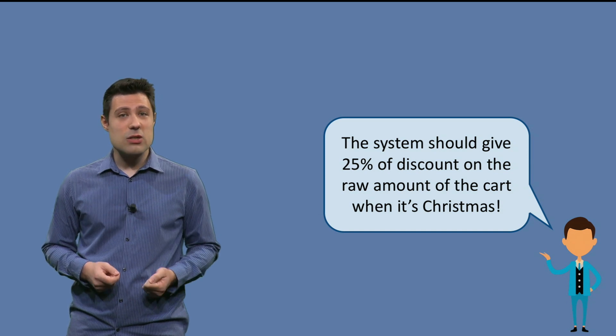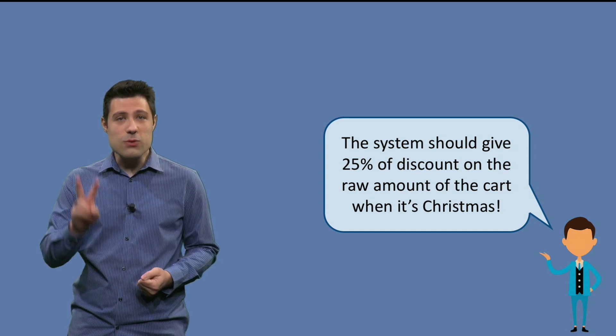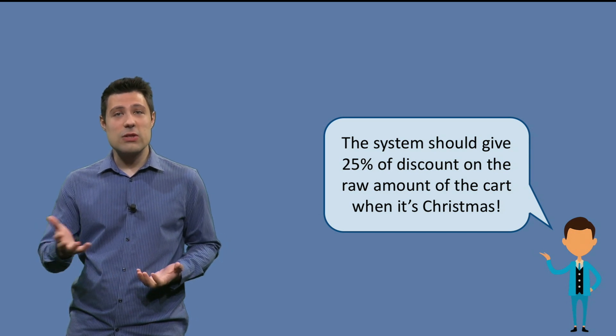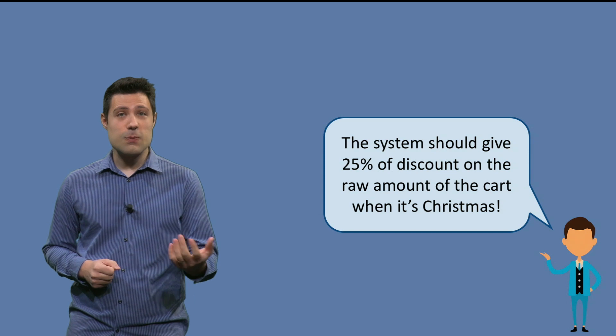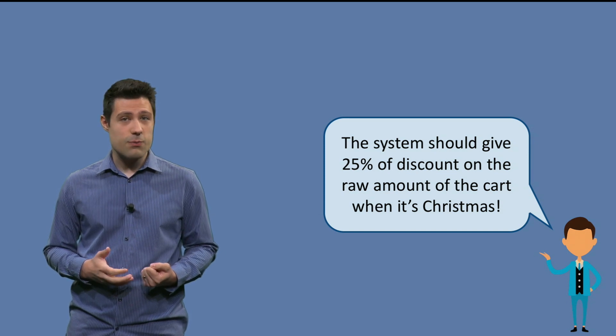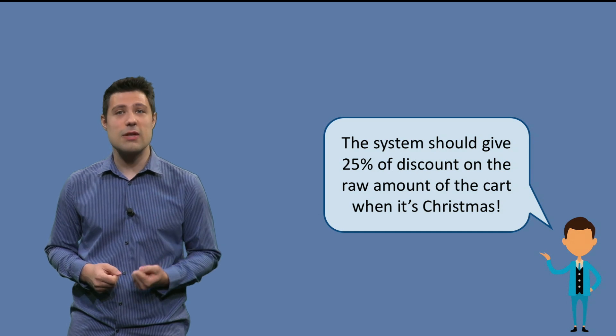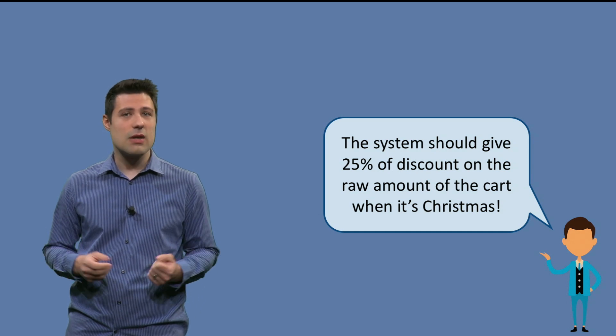Let's suppose we are testing this program and this program receives two parameters. One of them is the date and the other one is the raw amount. If it is Christmas, the program then gives 25% of discount in the raw amount. If it is not Christmas, then the program doesn't apply any discount to the final value.